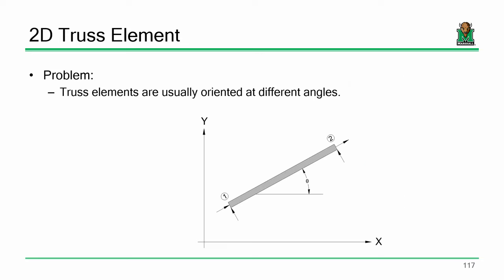Here's the problem. Truss elements are oriented all over the place — going like this, like that, like this. So we have to be able to account for those different orientations in some fashion.